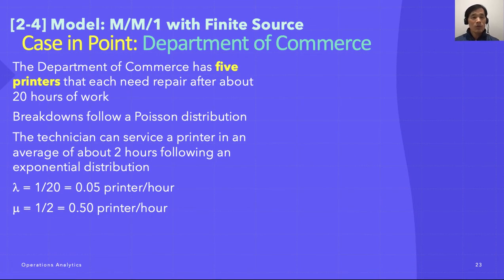The case in point is Department of Commerce. The Department of Commerce has five printers that each need repair after about 20 hours of work. It needs to be repaired every 20 hours or so. In this sense, five printers are the sources of the customers. It has only five, and it's a finite source. Therefore, this case has to be dealt differently from the other ones that we have talked about so far.